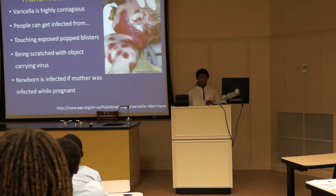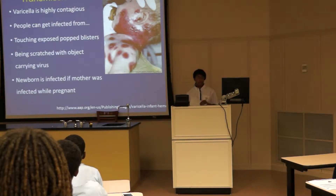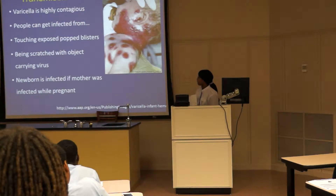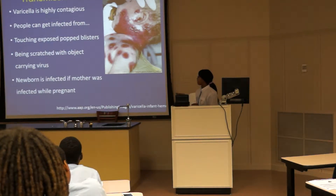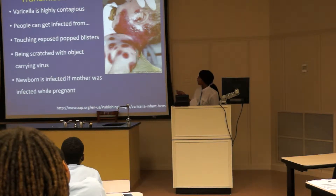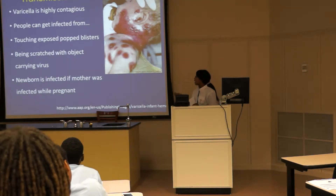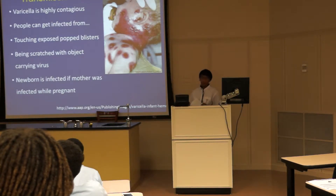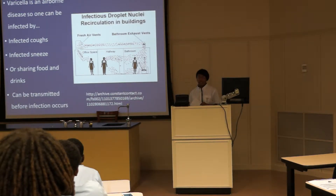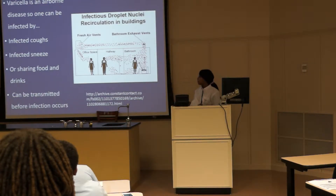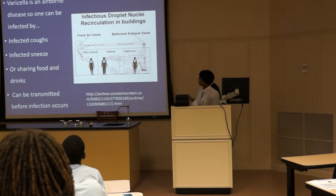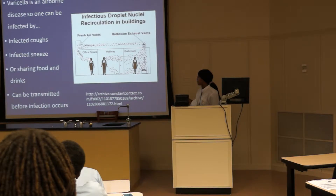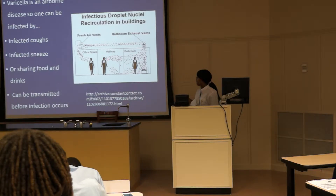Transmission. Varicella is highly contagious. People can get infected from touching exposed fluid blisters or being scratched with an object carrying the virus. This is most commonly caused when a child scratching its sores then scratches someone else, transferring Varicella on their nails into another person's bloodstream. This is a picture of a newborn that was infected because its mother, while carrying the child, was infected with Varicella, and the child was infected five days after birth, now experiencing the extremes of the rash. Varicella is also an airborne disease. Someone can be infected by inhaling infected coughs, sneezes, or by sharing food and drinks. It can be transmitted even before the symptoms first occur. Here is a diagram of how infected droplets can spread in a building through ventilation.